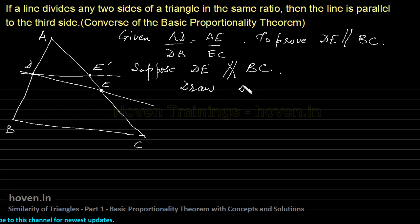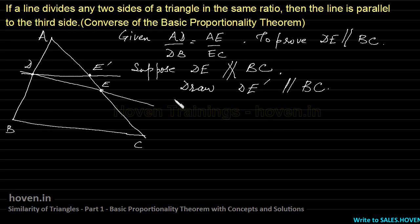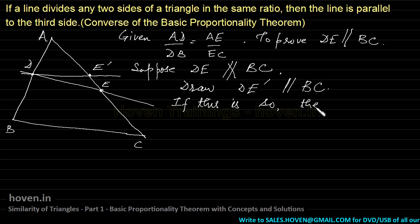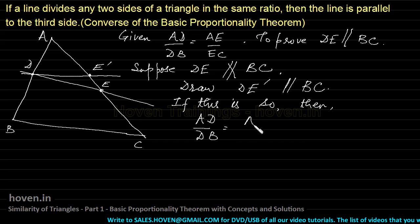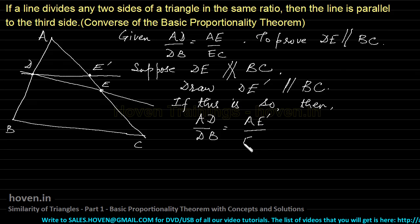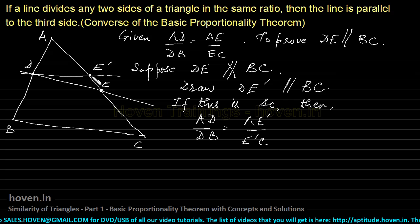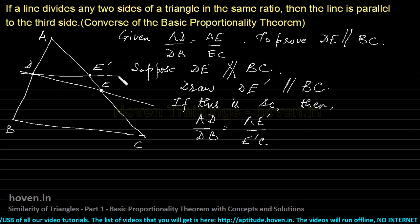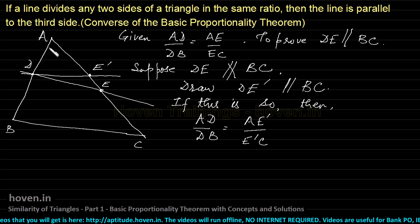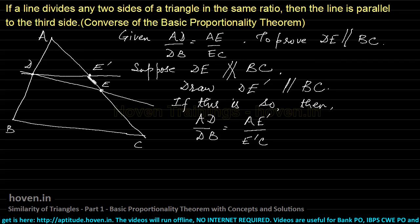If DE is not parallel to BC, then draw a line DE' through D which is parallel to BC. This is always possible — through any point we can draw a line parallel to a given line. Now DE' is parallel to BC, so by the Basic Proportionality Theorem, AD by DB should equal AE' by E'C.